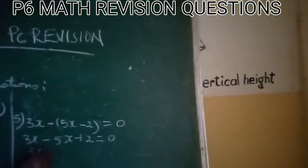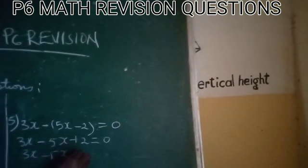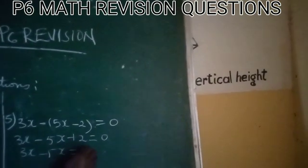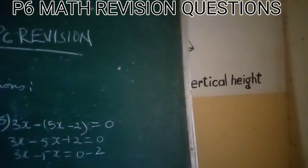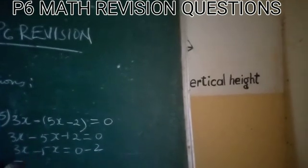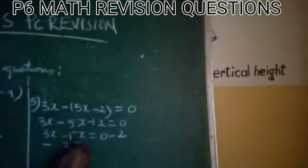And 3x minus 5x will be equal to 0 minus 2. Thus, negative 2x.